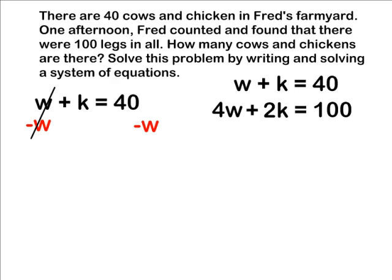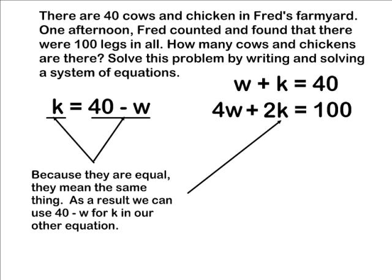Because k and 40 minus w have equal value, and we set our first equation equal to k, we must take 40 minus w and substitute that in for k in our other equation.